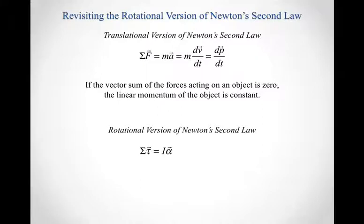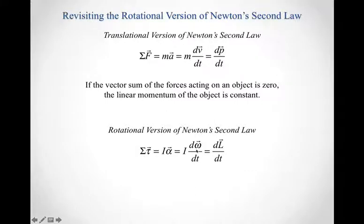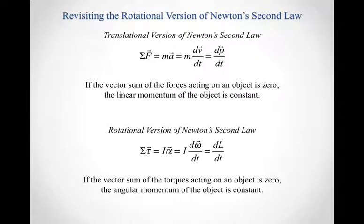For the rotational version of Newton's second law, the net torque equals the moment of inertia times the angular acceleration. We can play the same game: the angular acceleration is the derivative with respect to time of the angular velocity. Taking the moment of inertia I and tucking it into the derivative, we get the derivative with respect to time of I·omega, which is the angular momentum. So if the vector sum of torques about a particular pivot is zero, the angular momentum about that same pivot is constant.